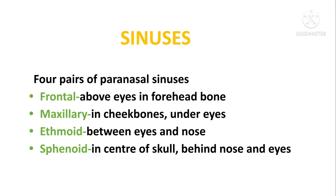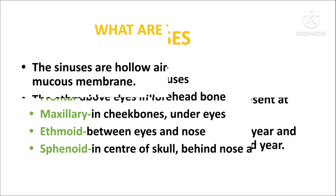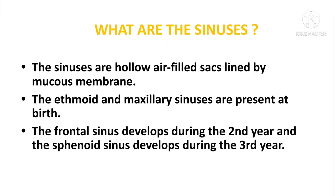Sinuses. There are four pairs of paranasal sinuses: frontal — above the eye and forehead bone; maxillary — in the cheekbone under the eyes; ethmoid — between the eyes and nose; and sphenoid — in the center of the skull behind the nose and eyes. The sinuses are hollow air-filled sacs lined by mucous membrane. The ethmoid and maxillary sinuses are present at birth. The frontal sinus develops during the second year and the sphenoid sinus develops during the third year.